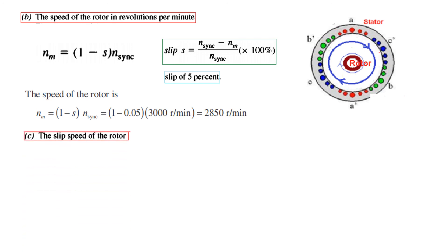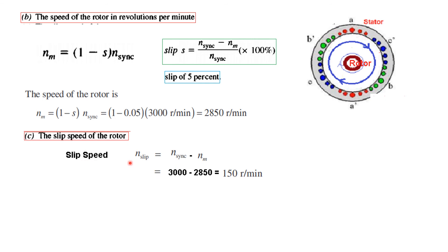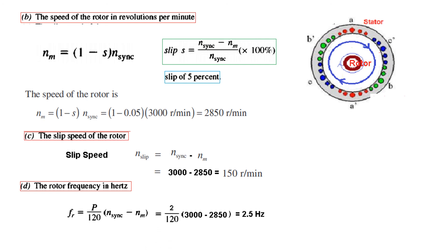Part c asks for the slip speed of the rotor — the speed at which the rotor is slipping behind. The slip speed N-slip equals N-sync minus N-motor, which gives 150 RPM. Finally, part d asks for the rotor frequency in hertz. Applying the formula F-r equals P divided by 120, times (N-sync minus N-m), and substituting the values, the rotor frequency is 2.5 Hz.